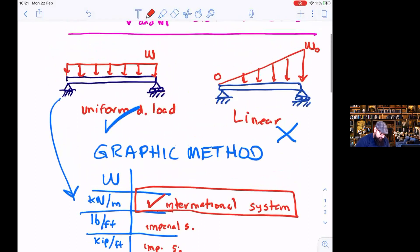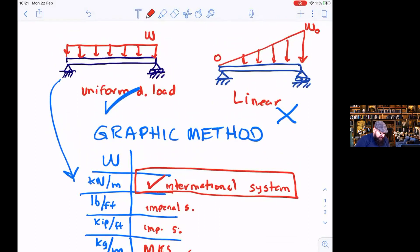But what is it telling you, the unit? It means that per every meter, for instance, if this is one meter, you will have certain amount of kilonewtons. So in total, if you have, for instance, five meters, the total load will be the area of this rectangle.